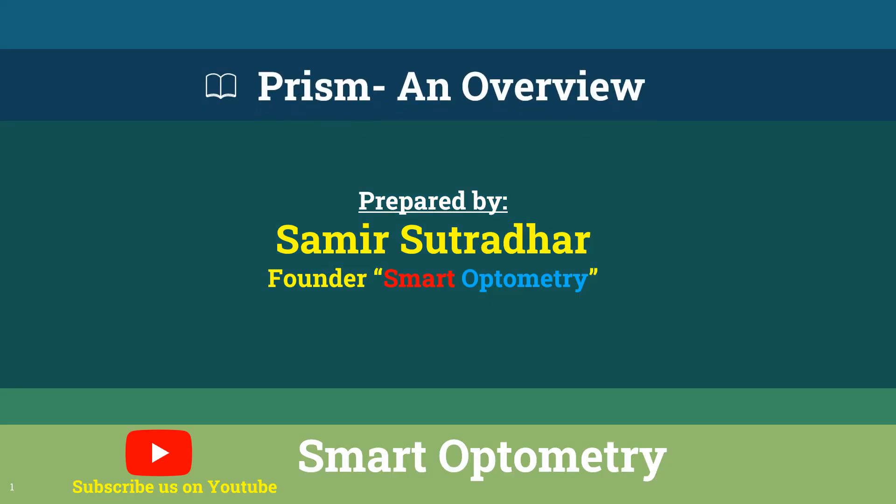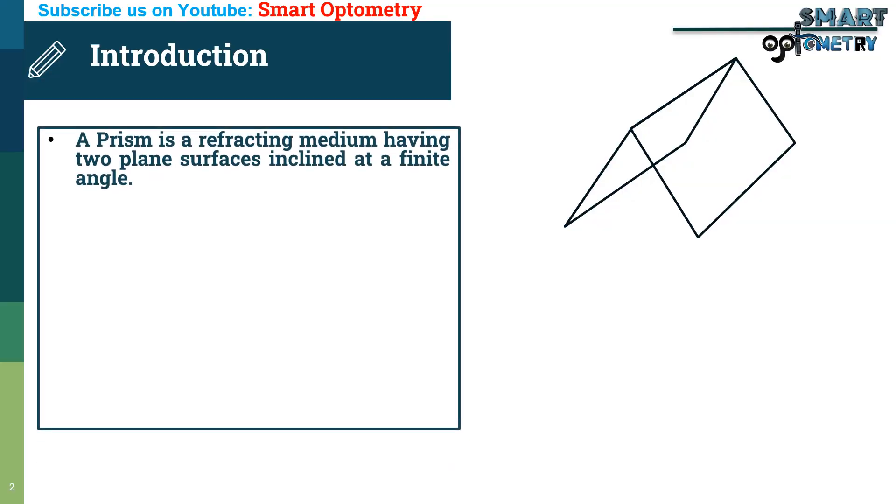Today I will discuss about prism and overview. A prism is a refracting medium having two plane surfaces inclined at a finite angle.